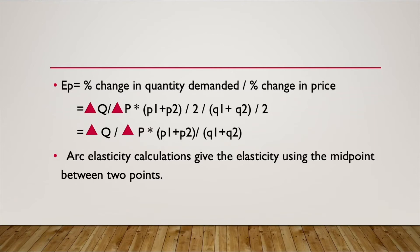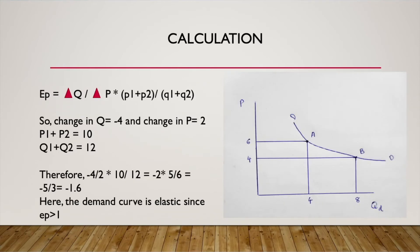When we simplify the equation, we get: ED = (ΔQ / ΔP) × (P1 + P2) / (Q1 + Q2). This is the simplified formula for calculating arc elasticity of demand.